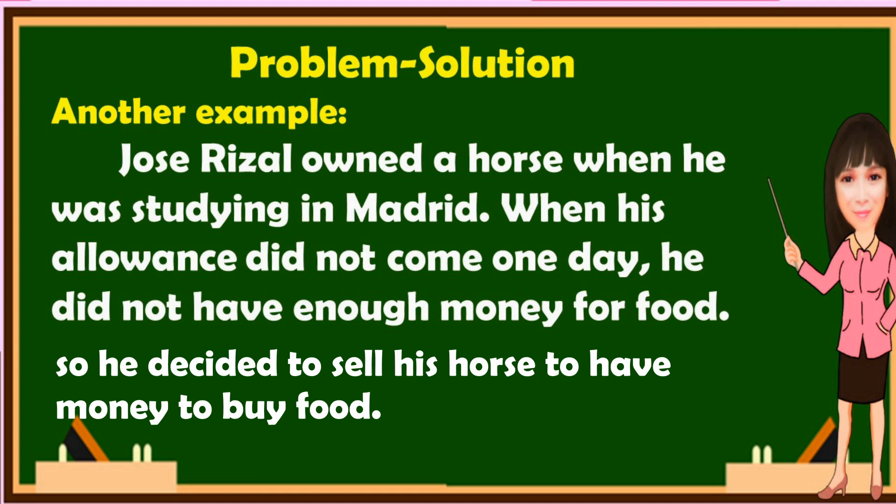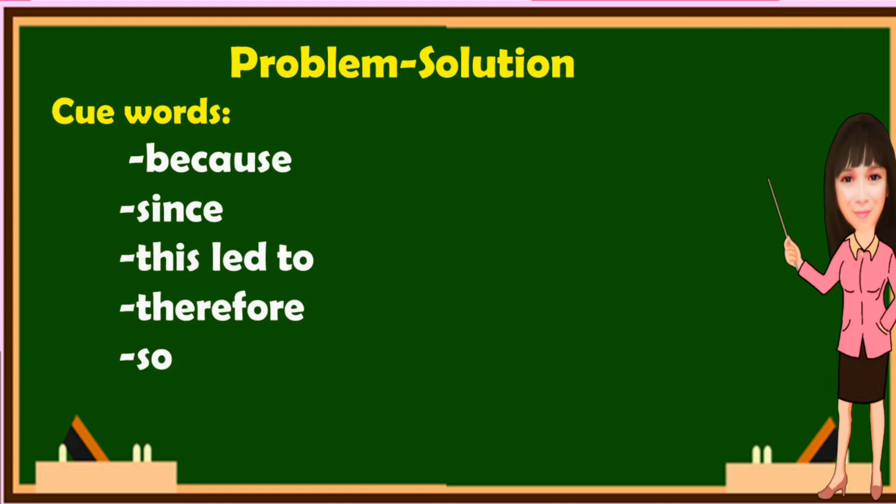This is an example of a problem-solution text. Here are some keywords that may indicate that information in a text is a problem-solution: because, since, this led to, therefore, so.